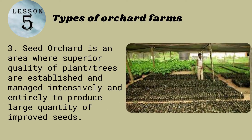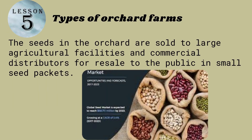Number three: seed orchard is an area where superior quality plant trees are established and managed intensively to produce a large quantity of improved seeds. Seeds in the orchard are sold to large agricultural facilities and commercial distributors for resale to the public in small seed packets. The size of the seed orchard is determined by the seed demand and the expected seed production from the orchard.